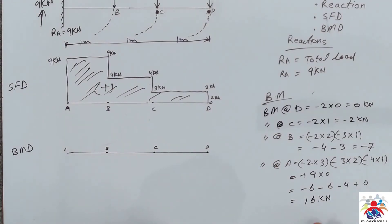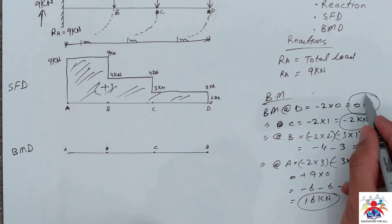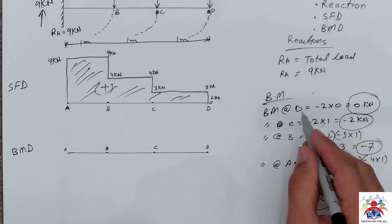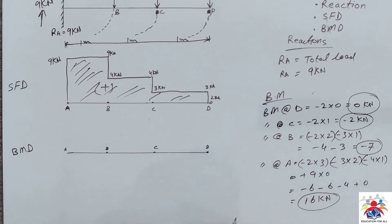Now based on these numbers we have to draw our bending moment diagram. So at point D we are 0. At point C we are minus 2. Minus 2 is roughly I would say here.